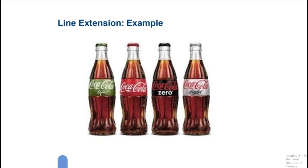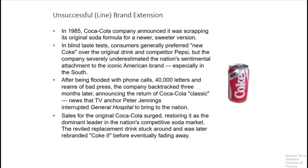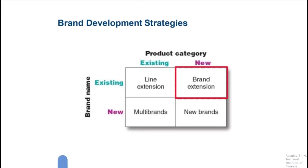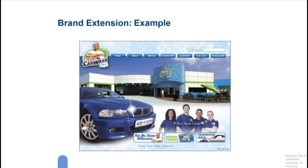In this slide you can see one unsuccessful line extension example of Coke — you can stop and read it in your free time, but we need to move on. Another type is brand extension: using the existing brand name to produce a new category of product. A brand extension extends a current brand name to new or modified products in a new category. For example, Procter & Gamble leveraged the strength of its Mr. Clean household cleaner brand to launch several new lines and even a Mr. Clean branded car wash.